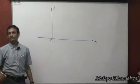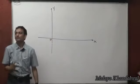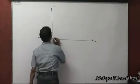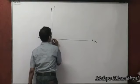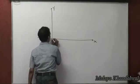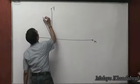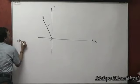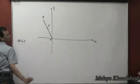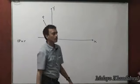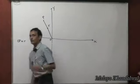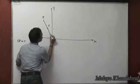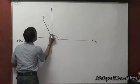Imagine a rotating line OP whose length is r. With this rotating line, we are going to associate an angle theta.